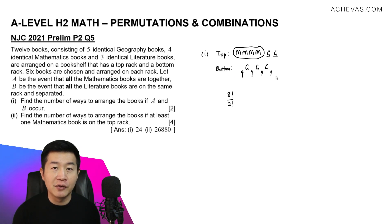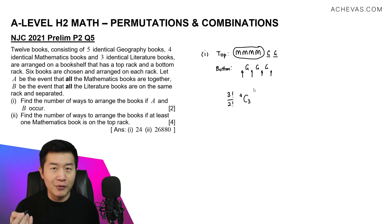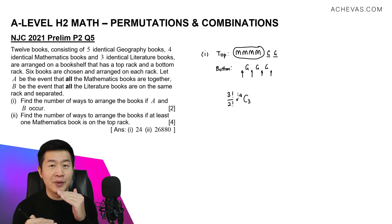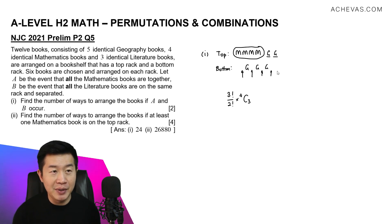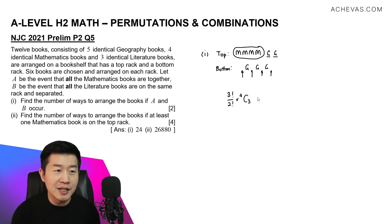We just need to focus on slotting the literature books into the four spaces. Out of four spaces, we choose three for the literature books. Since the literature books are identical, there's no point arranging them — it would just be 3 factorial divided by 3 factorial. So we multiply the top rack result by the bottom rack result. This is just one possible case since the racks can switch — multiplying by 2 gives our final answer of 24.